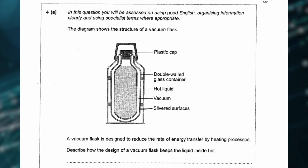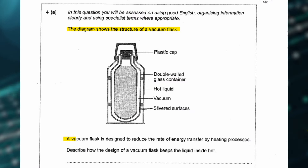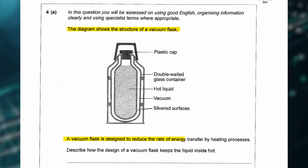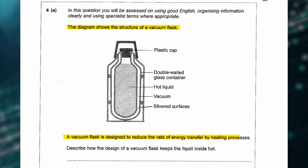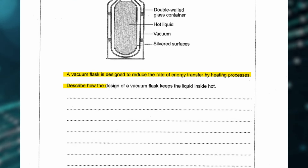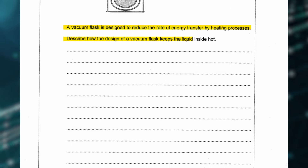The first 6-mark question says: the diagram shows the structure of a vacuum flask. A vacuum flask is designed to reduce the rate of energy transfer by heating processes. Describe how the design of a vacuum flask keeps liquid inside hot.